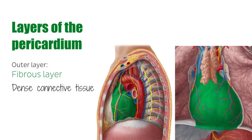The pericardial sac also attaches via ligamentous fibers to the sternum, and due to these attachments, it is affected by the movements of the heart, the great vessels, the sternum, and the diaphragm.